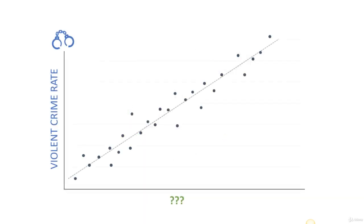What if I were to show you a scatter plot like this? We're plotting violent crime rate on the y-axis and some mystery variable on the x. Based on these 25 to 30 observations, we've got a very tight correlation — a pretty clear linear relationship between the two variables. So clearly they move in the same direction, clearly they're correlated. But you might be tempted to think that this x-axis variable is the driver behind violent crimes.